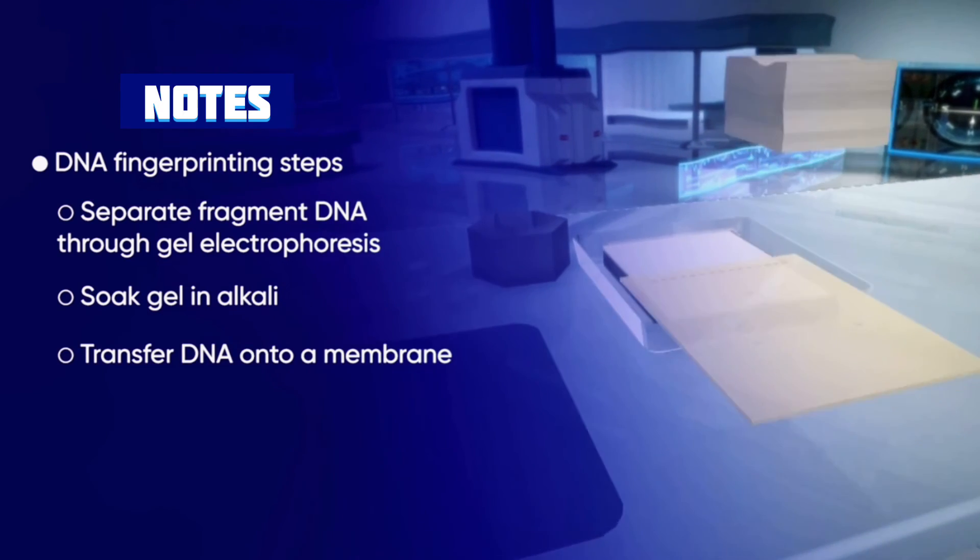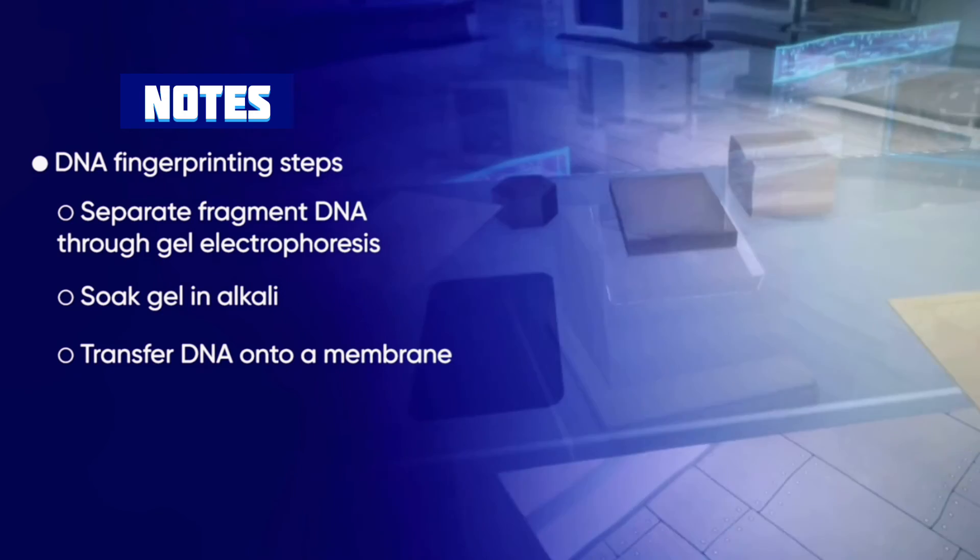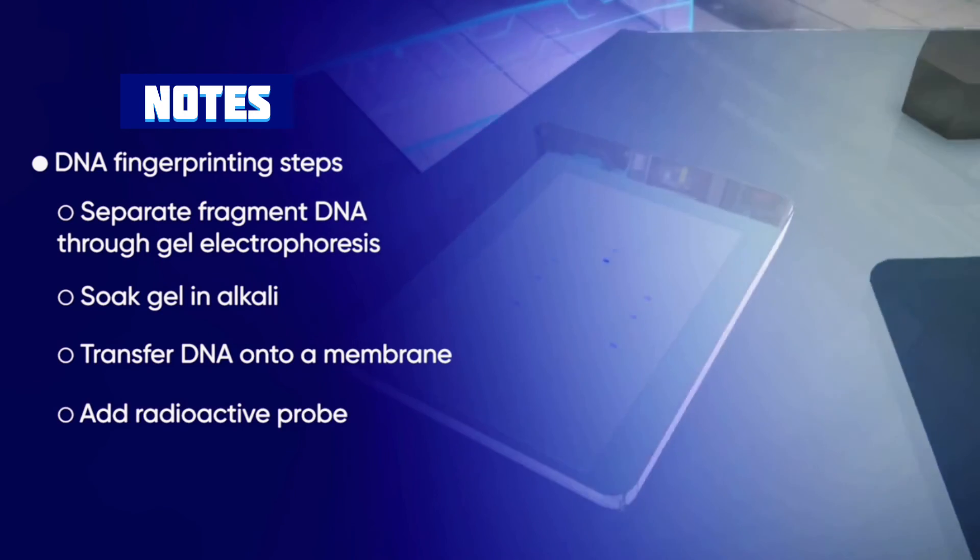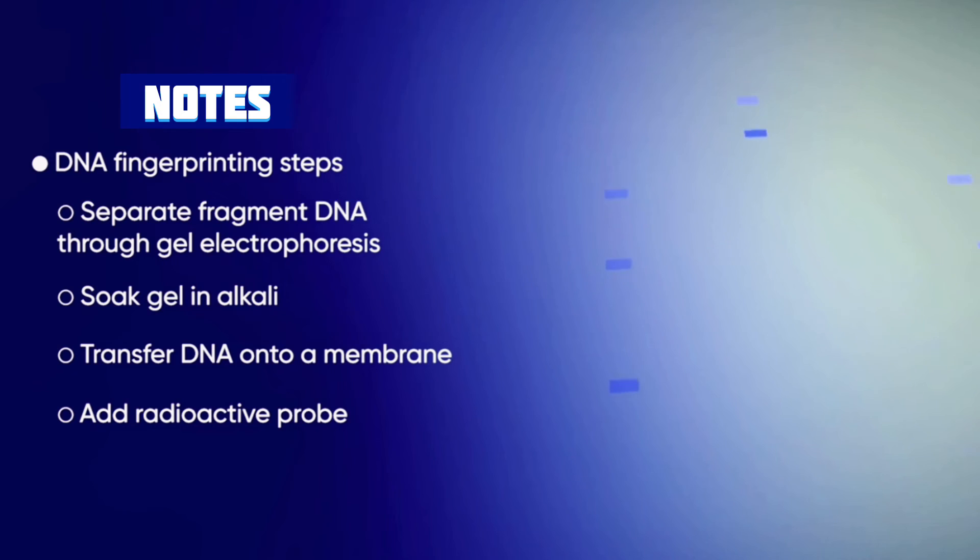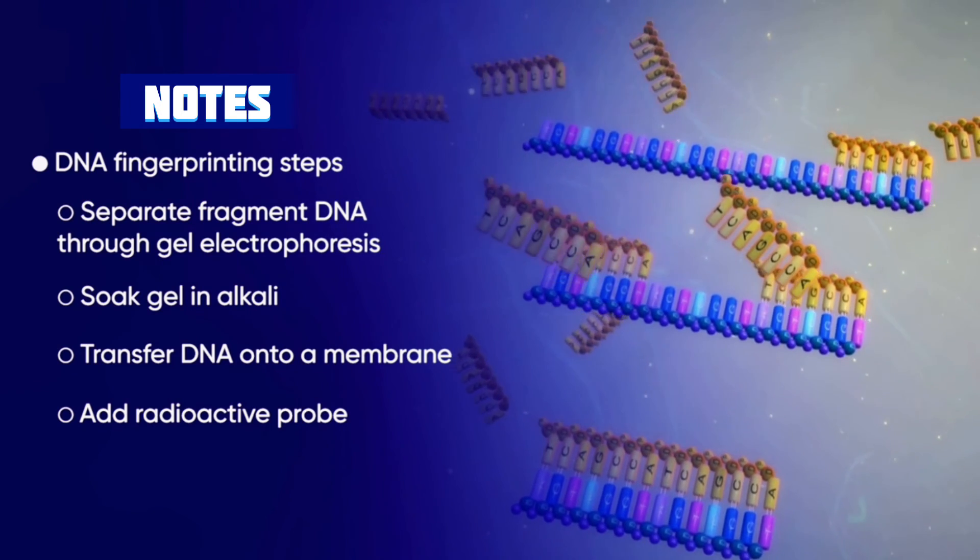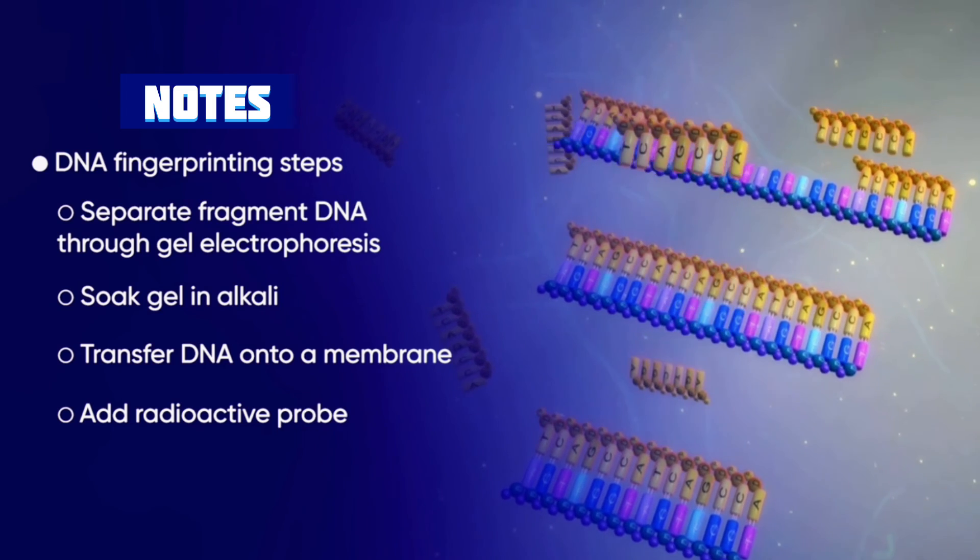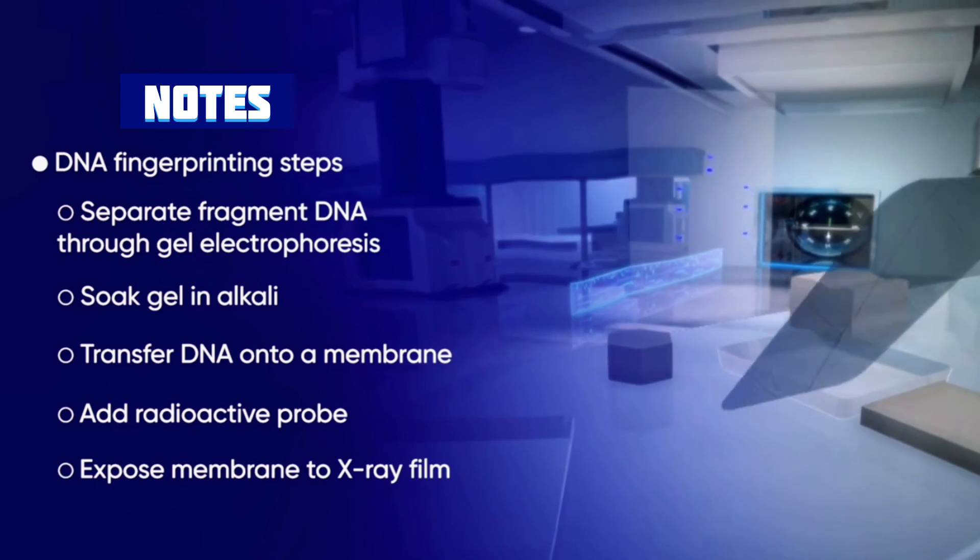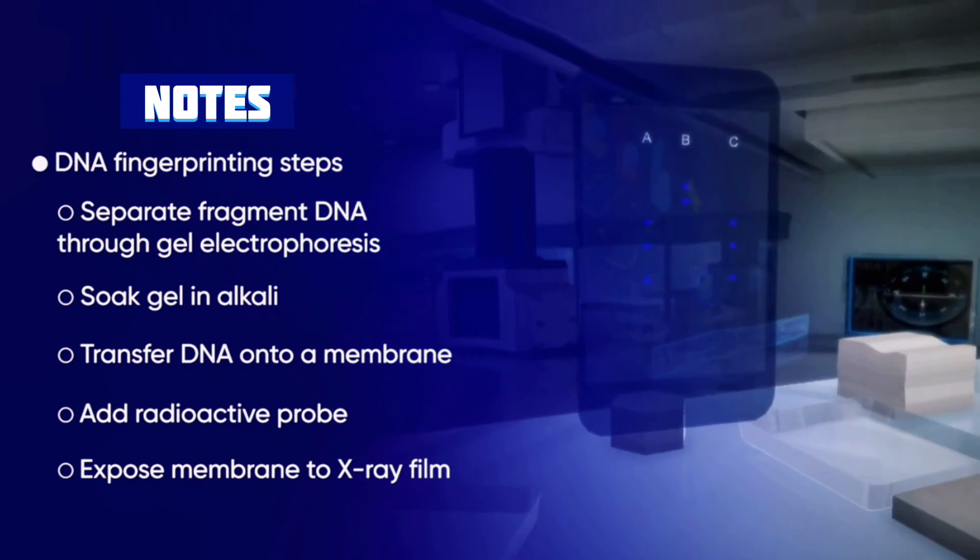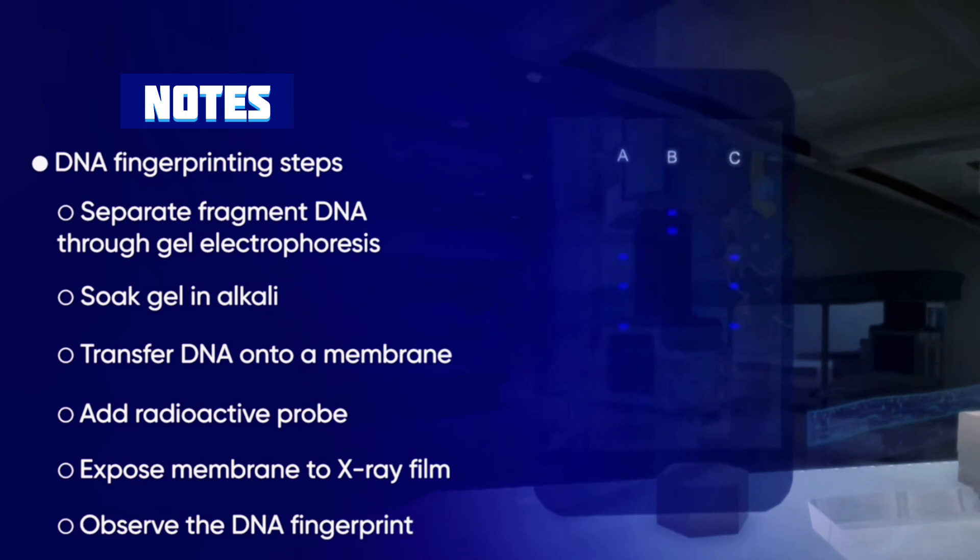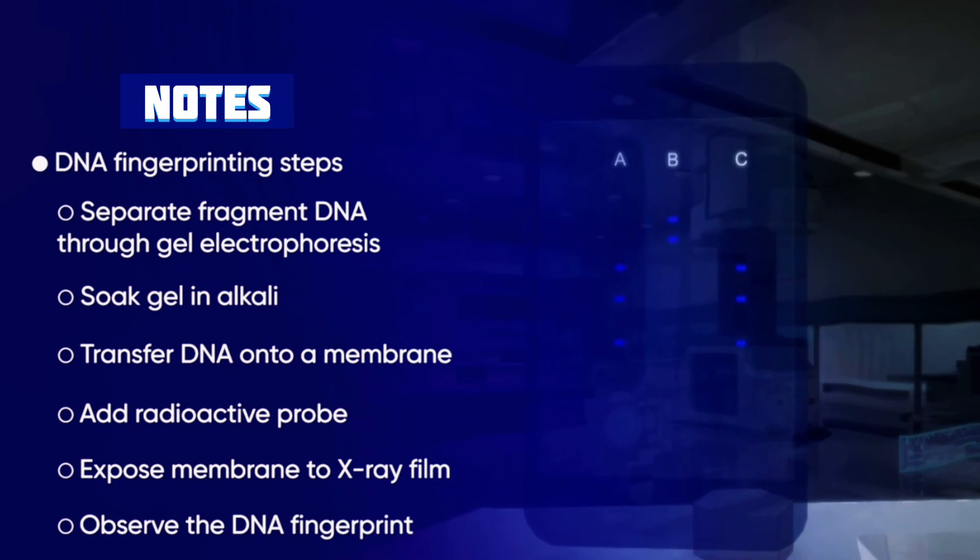Blot the DNA onto a nylon membrane. Immerse the membrane into radioactively labelled probes. This allows for the hybridization of sample DNA with a probe. Expose the membrane to an X-ray film. Observe dark bands of DNA fragments on the film.